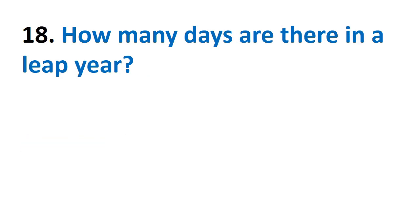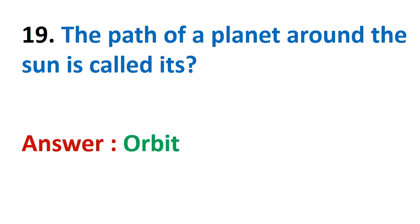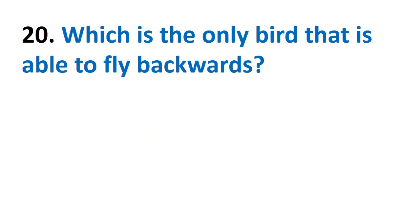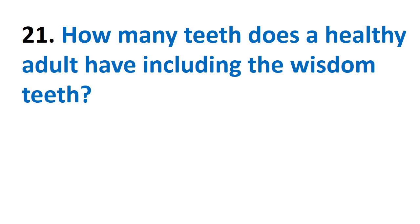How many days are there in a leap year? 366. The path of a planet around the sun is called its orbit. Which is the only bird that is able to fly backwards? Hummingbirds.